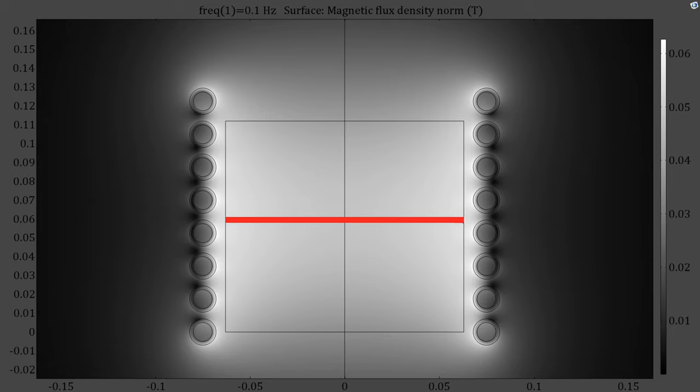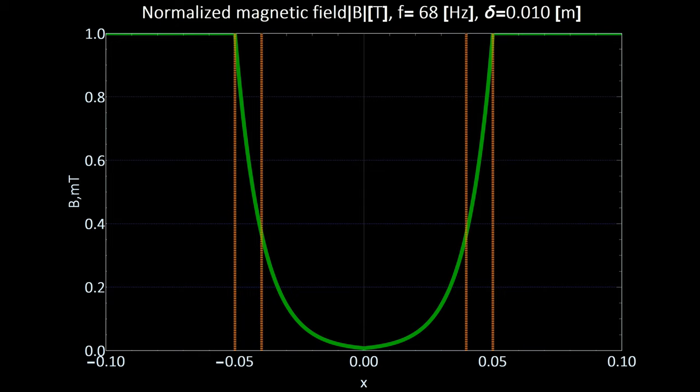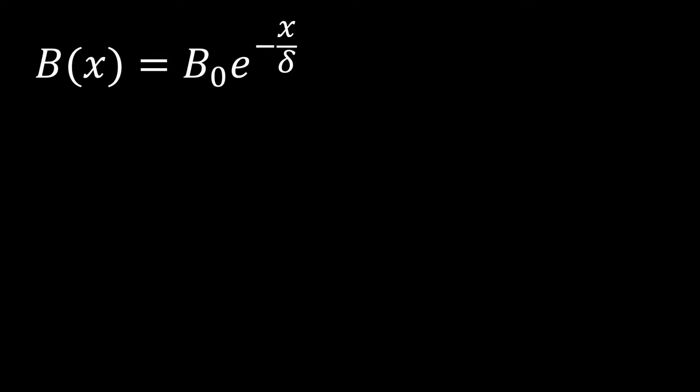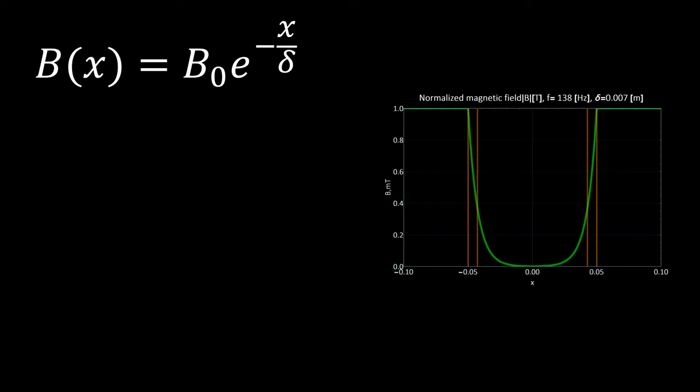To quantify this effect let's examine magnetic field strength on this red line. In case of low frequency field, magnetic field strength acts similarly as there was no conductor. However in high frequency case, magnetic field intensity drops exponentially when entering the conductor. This exponential drop in axial symmetrical case can be expressed with following equation. Here the most important value is skin depth δ, which here is the distance between orange lines and governs how rapidly magnetic field drops.